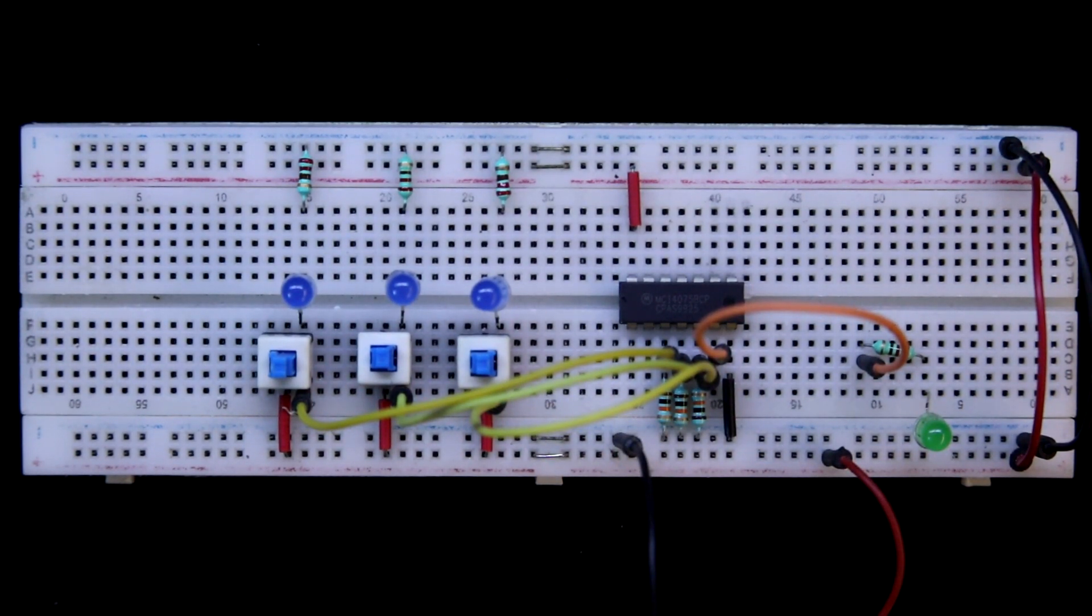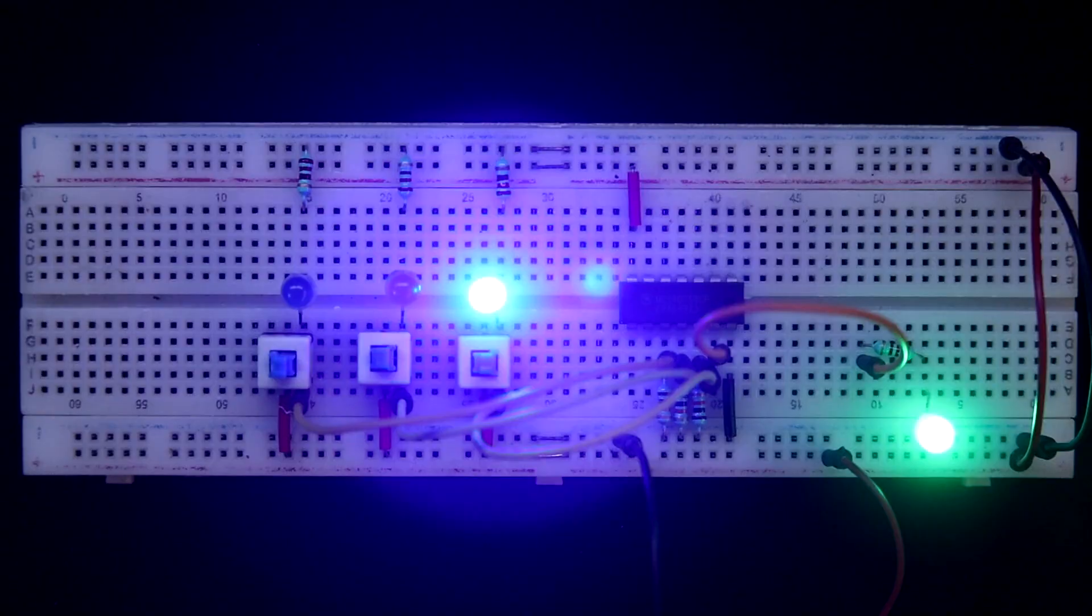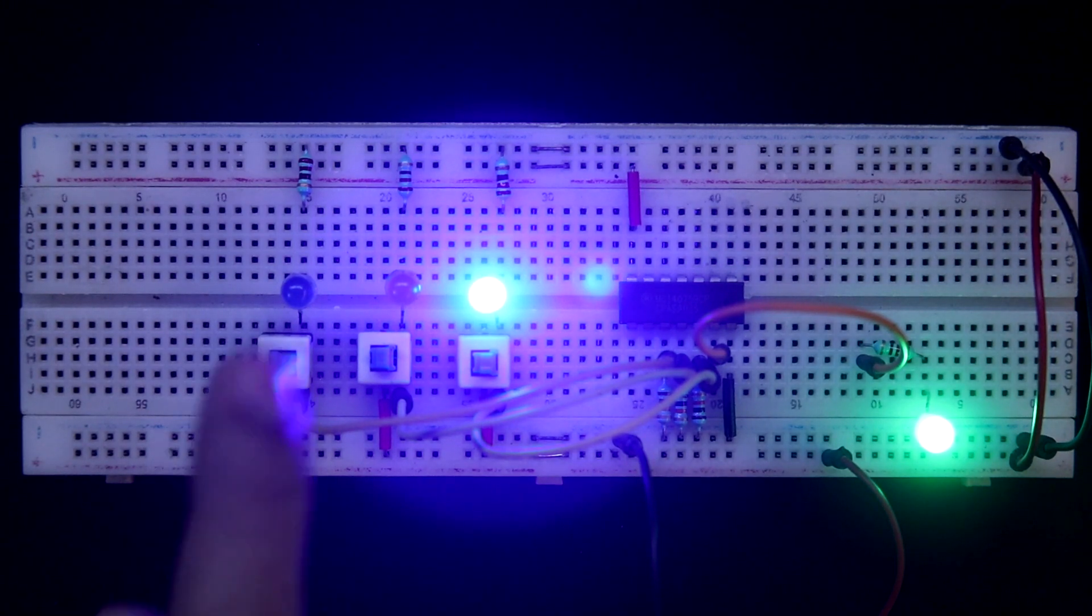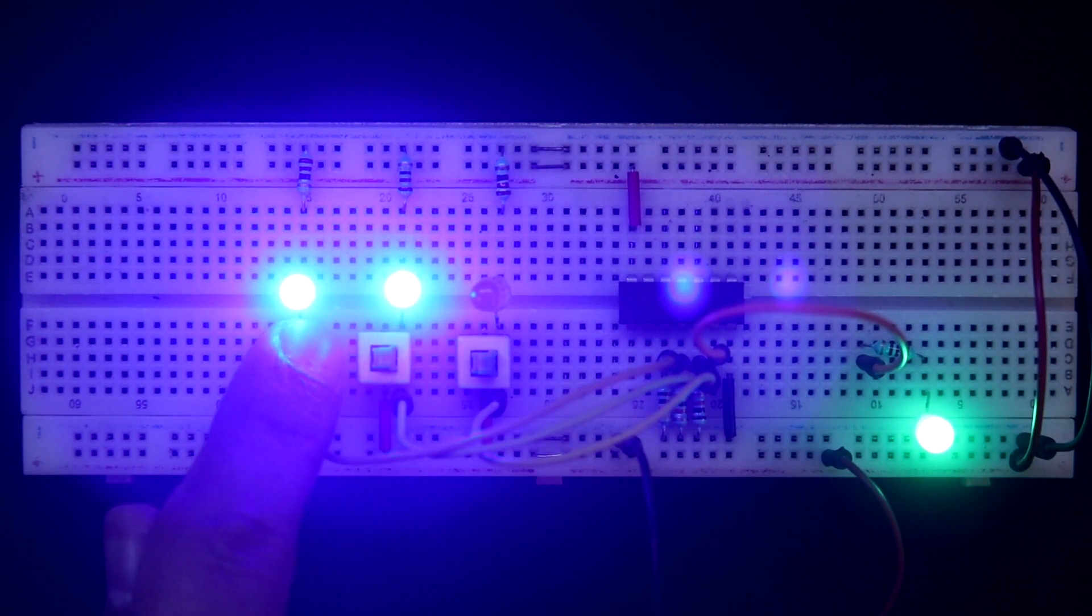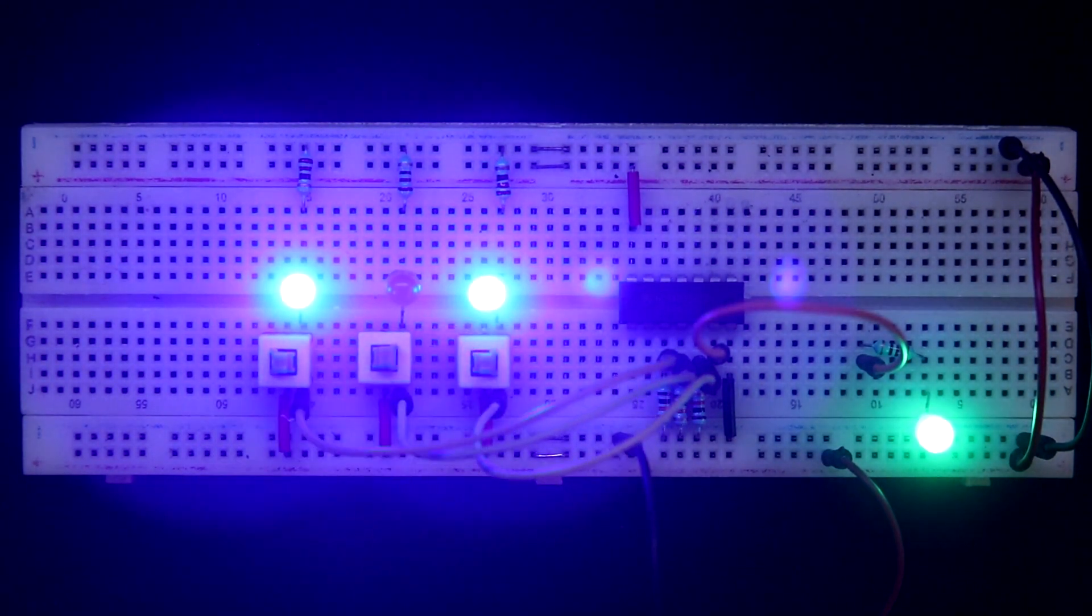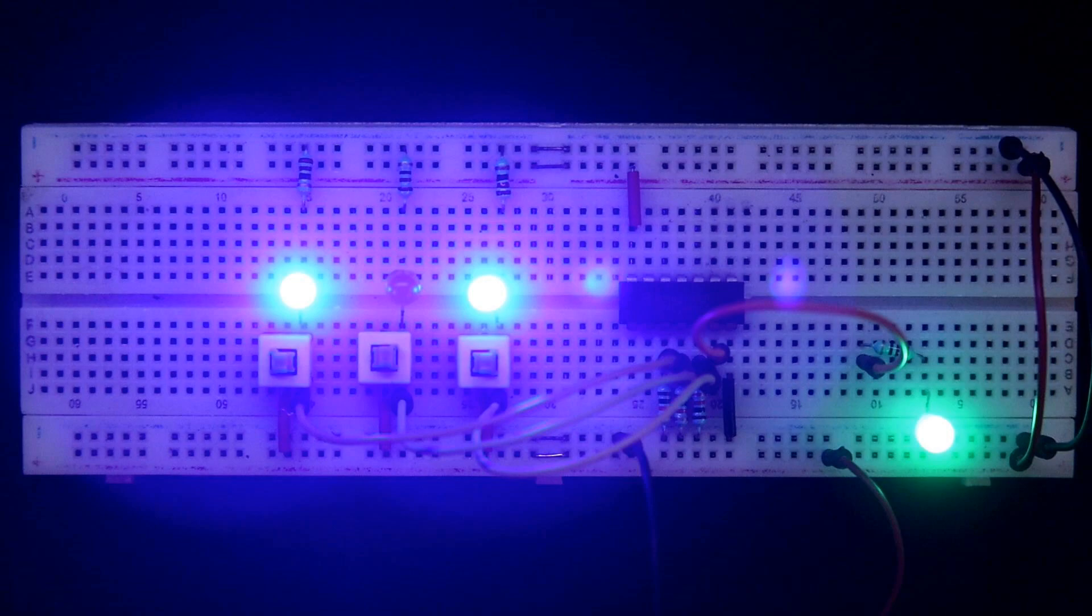If we make any one of the inputs 1, we will get the output. So this is how an OR gate works. This is the working of CD4075.